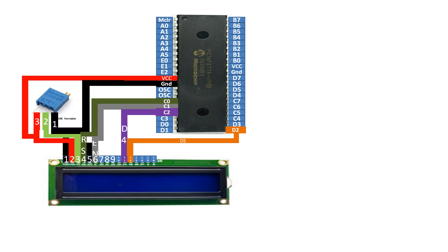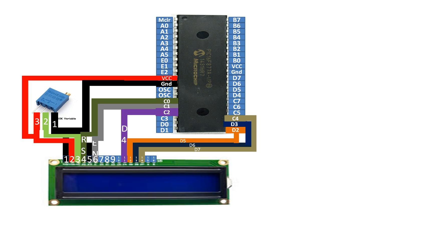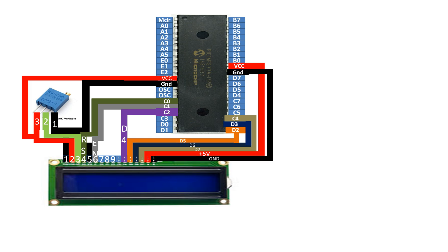For pin 13 of the LCD I will connect it to pin 22 of the PIC. For pin 14 of the LCD I will connect it to pin C4, that is pin 23. Pins 15 and 16 of the LCD are for the backlight — only connect these if your LCD has a backlight. Pin 15 is the 5V backlight supply and pin 16 is ground. The four center pins — 7, 8, 9, and 10 — are not used in 4-bit mode, so leave them unconnected.